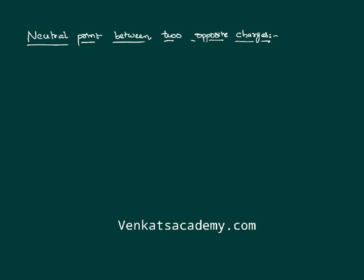Hello everyone. Today I would like to find a neutral point between two dissimilar charges. By dissimilar charges, I mean one point charge q1 is a positive charge and another charge q2 is an opposite, negative charge. I want to find the neutral point of these two charges.